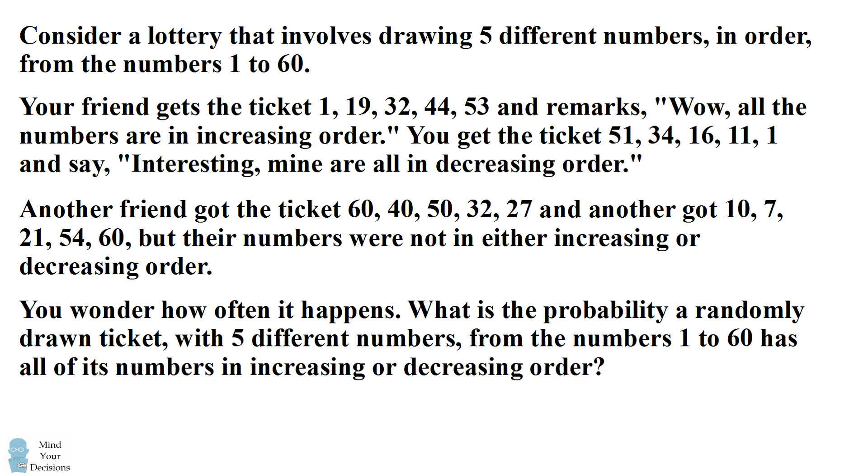You wonder how often it happens. What is the probability a randomly drawn ticket with five different numbers from the numbers 1 to 60 has all of its numbers in increasing or decreasing order?